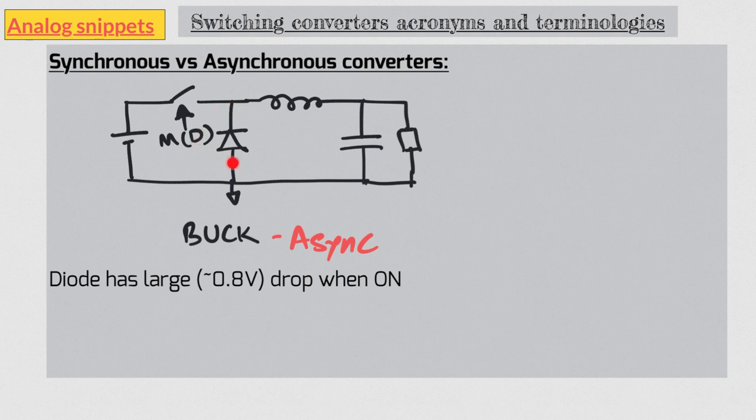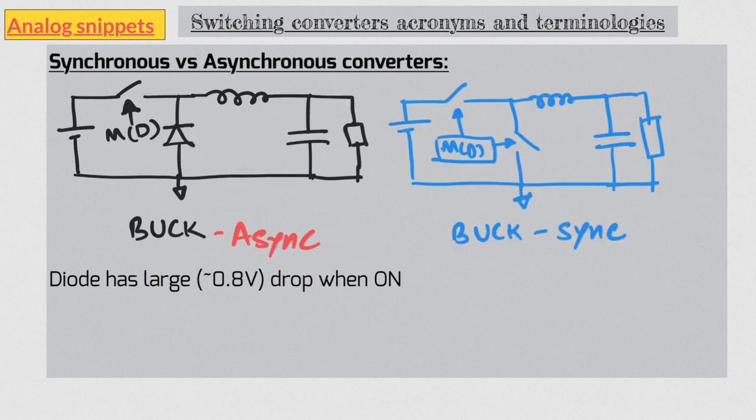In most designs this diode is replaced with another switch. And with this change we have a synchronous buck. This new switch has a much smaller drop and hence it gives much better efficiency, but it causes more design problems as well.